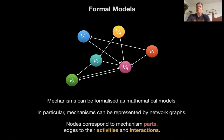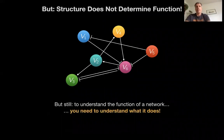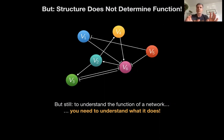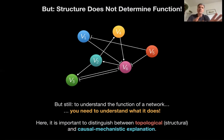Network graphs lend themselves very easily to representing mechanisms: the parts are the nodes in the network and the activities and interactions are represented by the edges of the graph, especially in a directed graph. So we're tying things together that we've already been through. And here's the mantra again: structure does not determine function. To understand the function of this network we need to understand what it does — you need a mechanistic explanation in this neo-mechanistic sense to know what the network does.